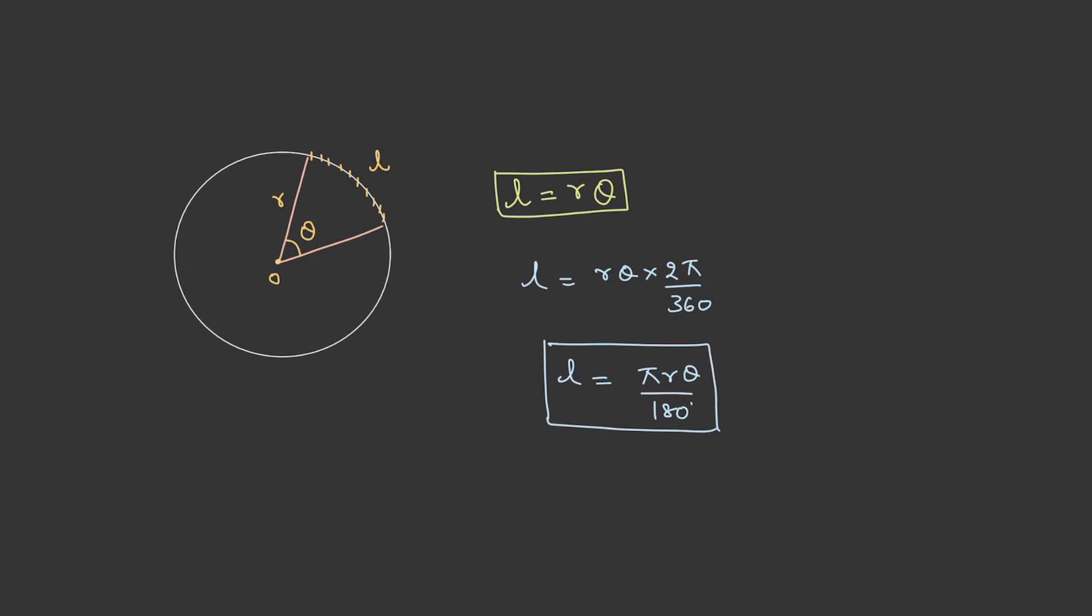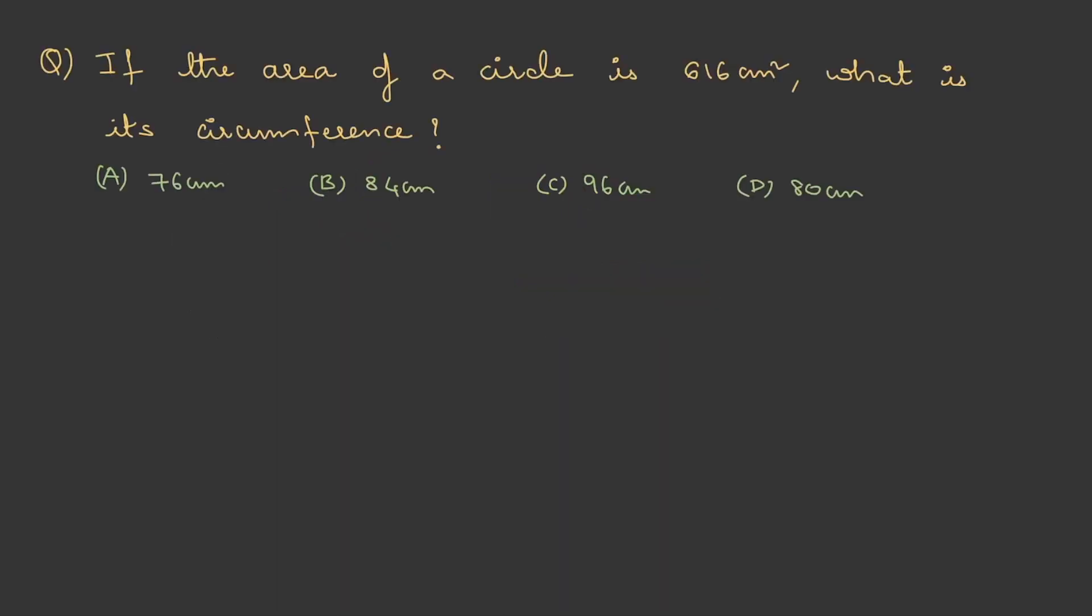This much basics is enough. Let's quickly get into the questions. Question 1: If the area of a circle is 616 cm², what is its circumference? From this data we can find the radius. Area of a circle is πr², so πr² = 616. Therefore, 22/7 × r² = 196, and r = 14 cm.